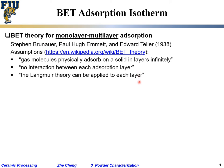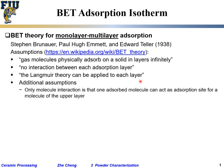The Langmuir theory can still be applied for each individual layer. For the second layer, you adsorb onto the first as if the Langmuir theory still applies — partial coverage and adsorption-desorption under equilibrium. You cover the second layer completely and then cover the third layer.